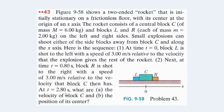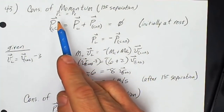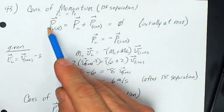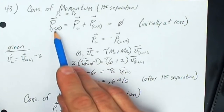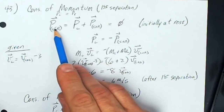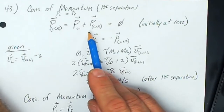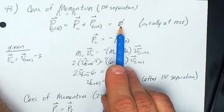At time t equals 2.8 seconds, what are the velocity and position of block C? We're going to use conservation of momentum to solve this problem. The momentum at the beginning is zero — nothing is moving. Because the separation occurs due to an internal force, the total momentum remains zero.